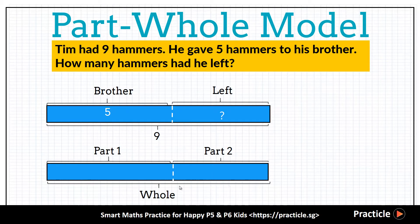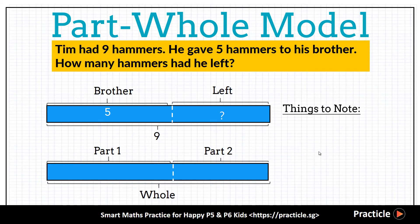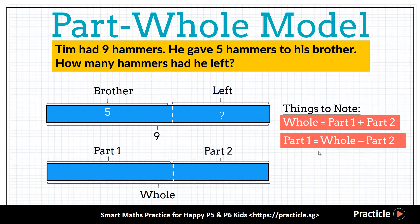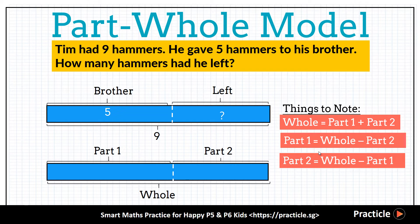Whenever we use the part-whole model, it's important to know that it always consists of the whole — which is everything — and then out of this everything, the person will usually use one part of it to do something, and another part to do something else. There are three simple relationships to remember. First, to find the whole, we add up the two parts together. To find one part, we take the whole minus the second part. Similarly, to find the second part, we take the whole minus the first part.